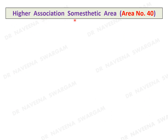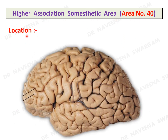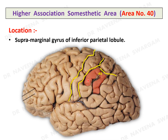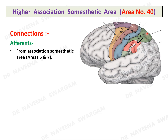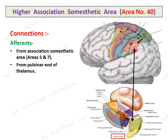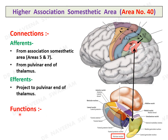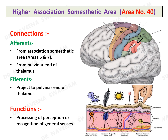Higher association somesthetic area, area 40: here is the central sulcus, postcentral sulcus, and intraparietal sulcus. The area occupies the supramarginal gyrus of the inferior parietal lobule, which lies around the tip of the posterior ramus of the lateral sulcus. It receives afferents from the association somesthetic area (areas 5 and 7) and from the pulvinar of the thalamus, to which efferents are also projected. Similar to the association somesthetic area, it recognizes general senses by processing perception.